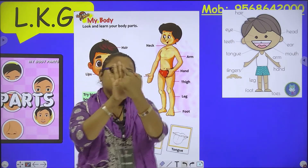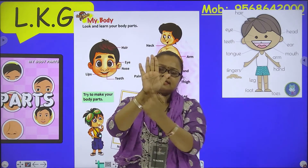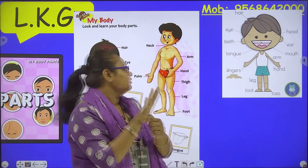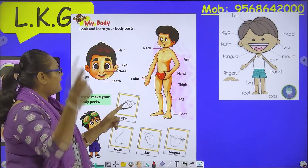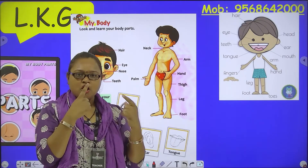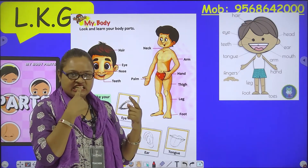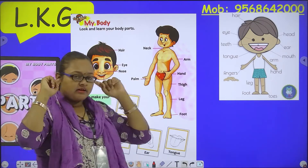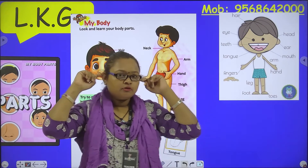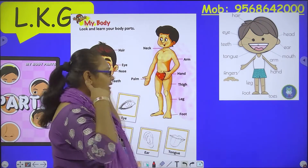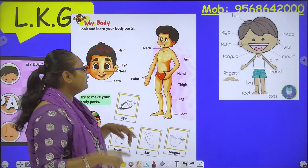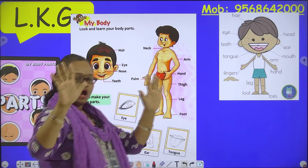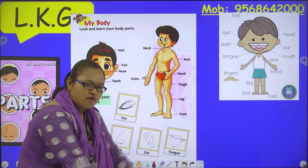Palm kya hota hai? This is palm — the inner part of the hand, called hatheli in Hindi. So, let's read again: hair, eye, nose, teeth, lips, and ear — ear also comes on the face. Now: neck, arm, hand, palm, thigh, leg, foot.